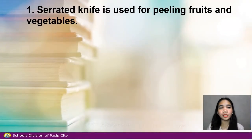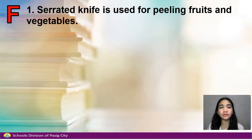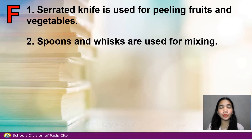Number 1. Serrated knife is used for peeling fruits and vegetables. False, because serrated knife is used for cutting bread, and paring knife is used for peeling fruits and vegetables. Number 2. Spoons and whisk are used for mixing.